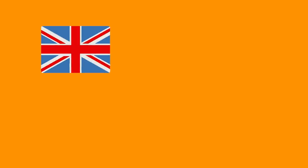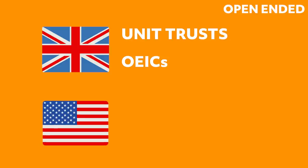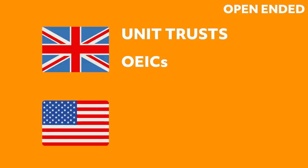Active funds break down into two different types: open-ended and closed-ended. Open-ended funds in the UK tend to be called unit trusts or open-ended investment companies (OICs), and in the US they're also known as mutual funds.